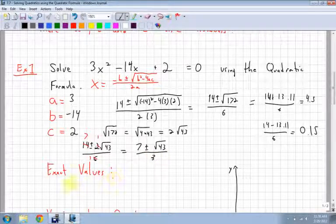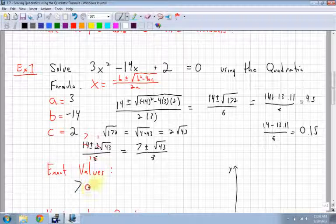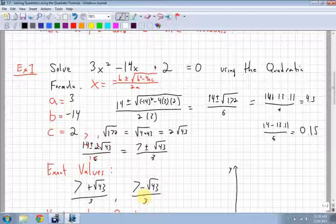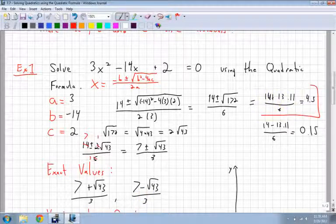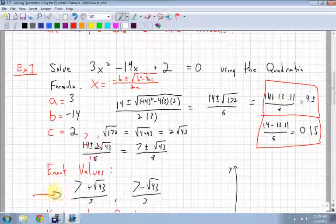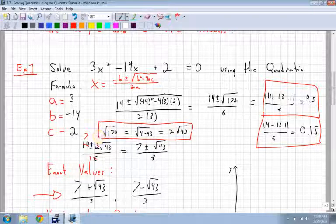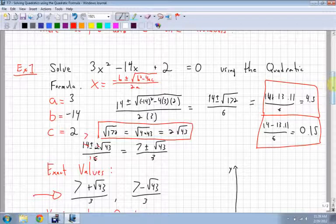What are my exact values? My exact values are 7 plus root 43 over 3 and 7 minus root 43 over 3. So there's a lot of stuff involved there. You can either give the decimal answers or you can give the exact values. And be aware how to reduce radicals. Very important, because answers on tests usually want them in reduced radical form.